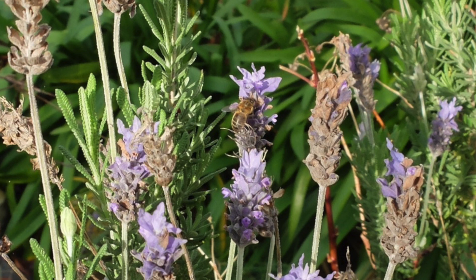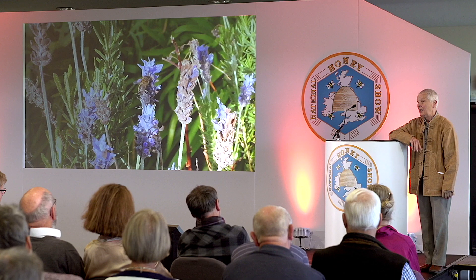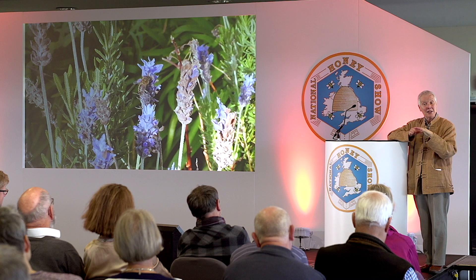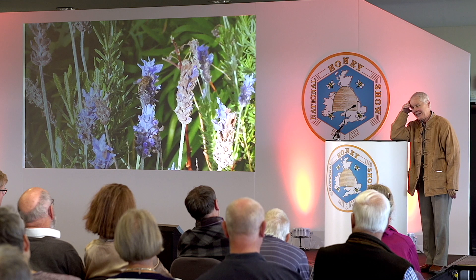Lavandula dentata is a scruffy lavender. When I mention it to gardeners, they say they prefer the beautiful French lavenders or the splendid English ones — but those flower and finish, as we all know. I do not understand this plant; it simply cannot be stopped. I have more or less a hedge of it at this stage. I do warn you, it is not fully hardy. But if you've got a sheltered spot, this scruffy lavender will do for your bees at every point in the year.